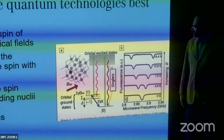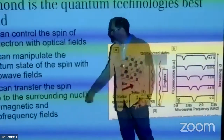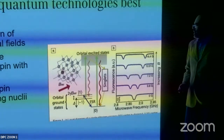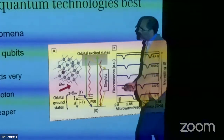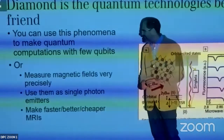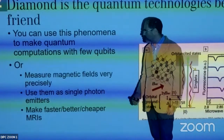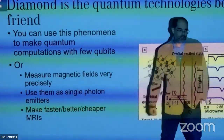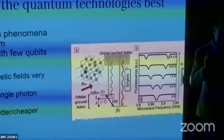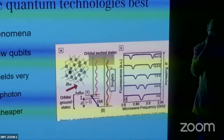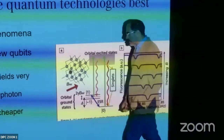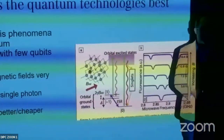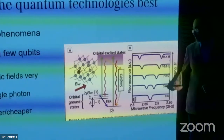You can also transfer the electronic spin state to surrounding nuclei via the hyperfine coupling. This is interesting not only for controlling quantum states at room temperature but because you can measure magnetic fields very precisely, use NV centers as single-photon emitters, and potentially improve nuclear magnetic resonance (NMR) and MRI techniques.